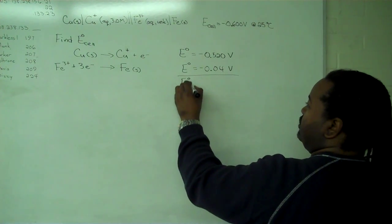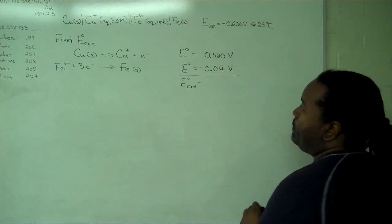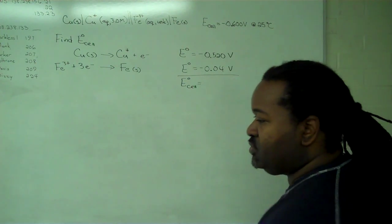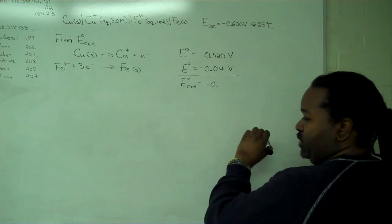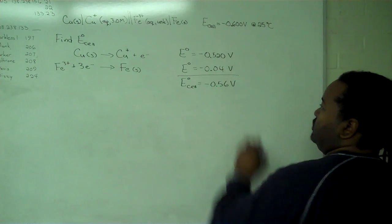Combining these two values gives us the E cell standard. So when we combine these two, we get negative 0.56 volts.